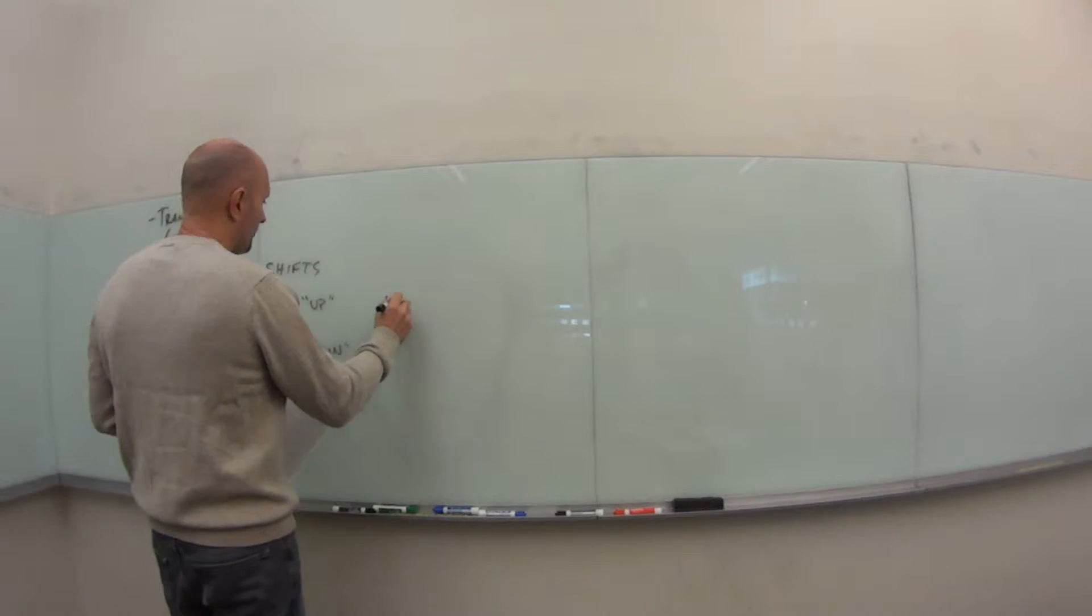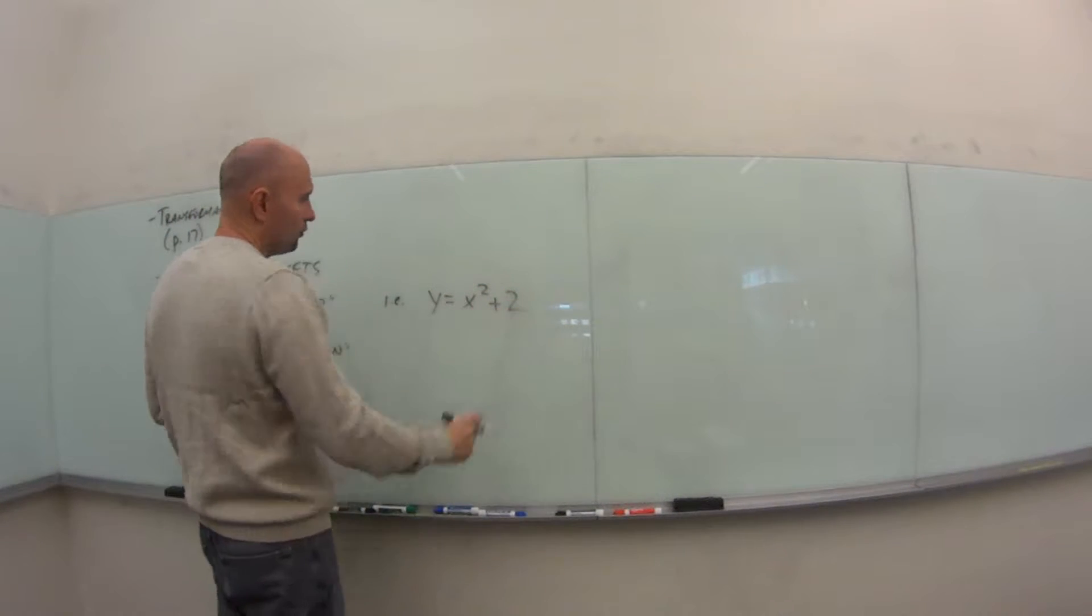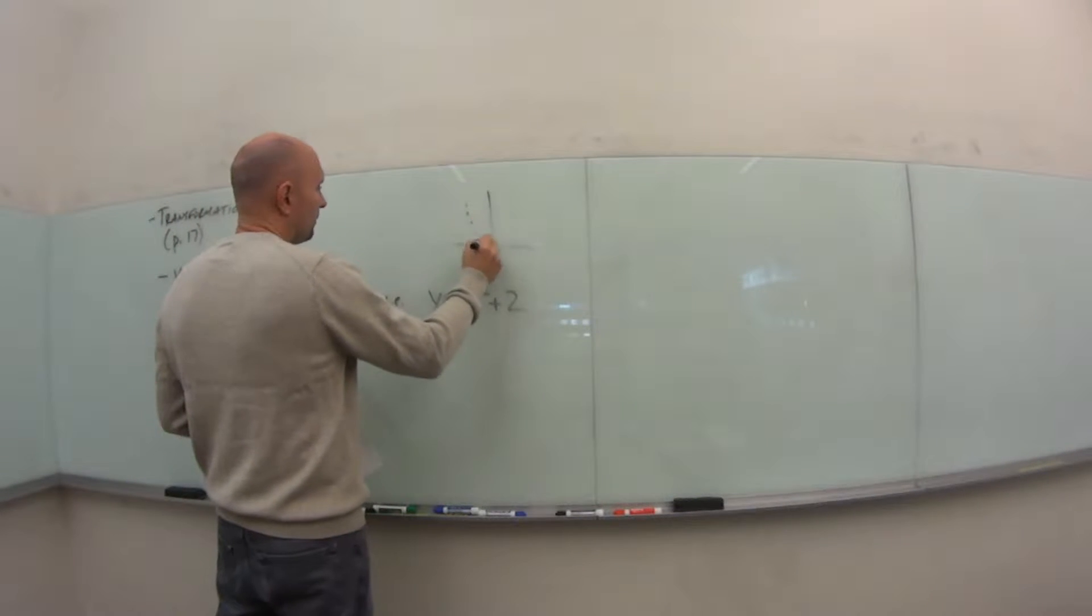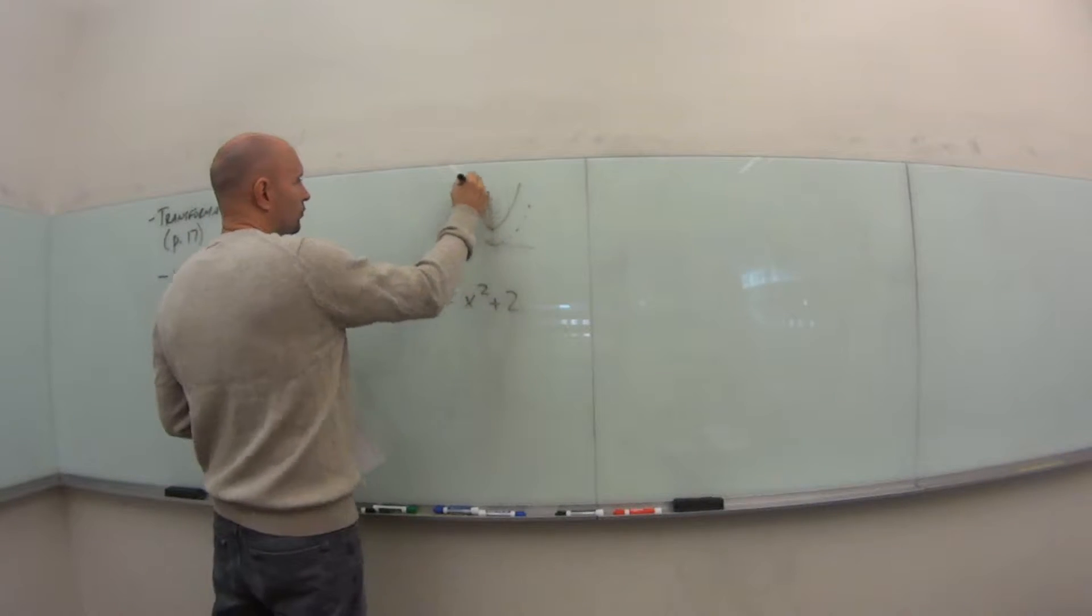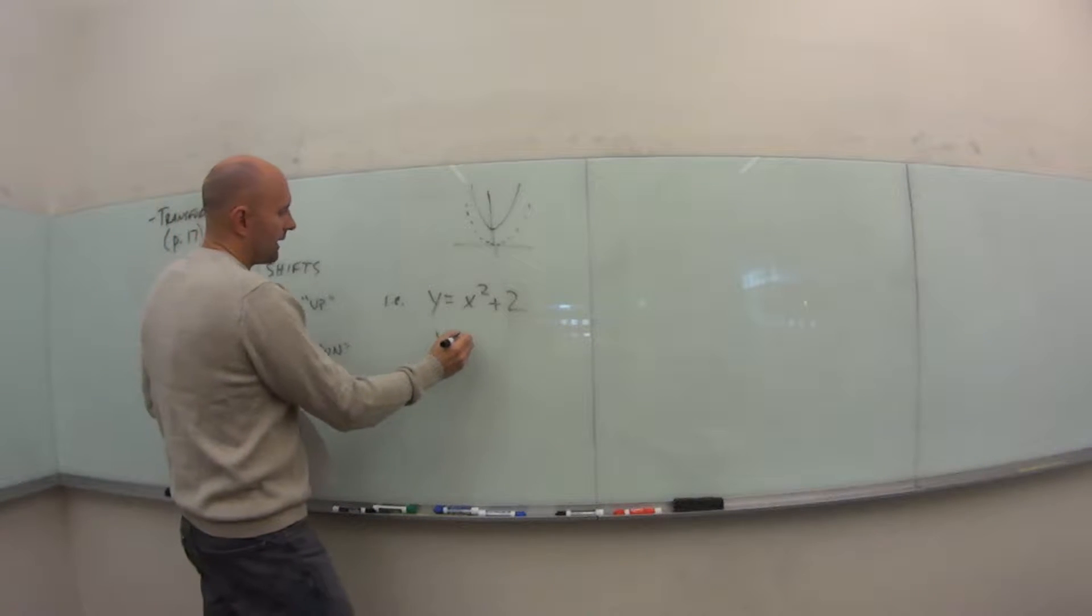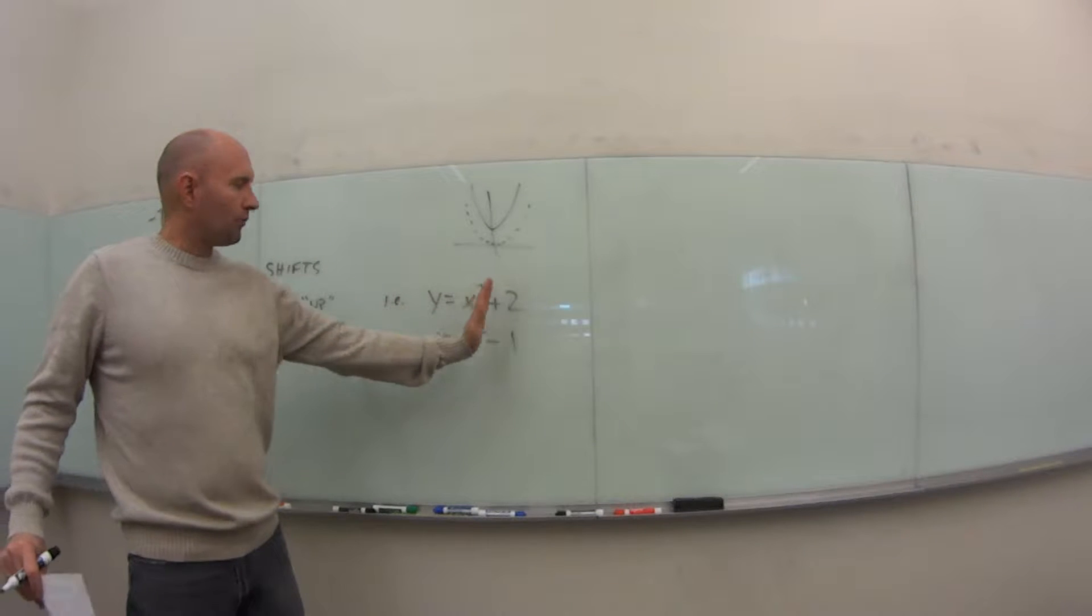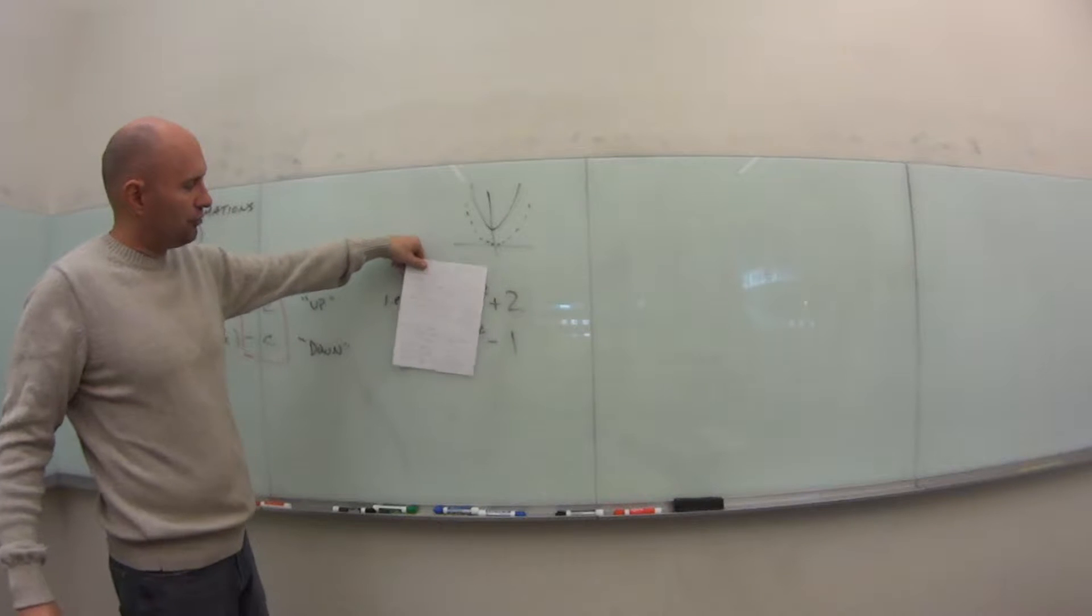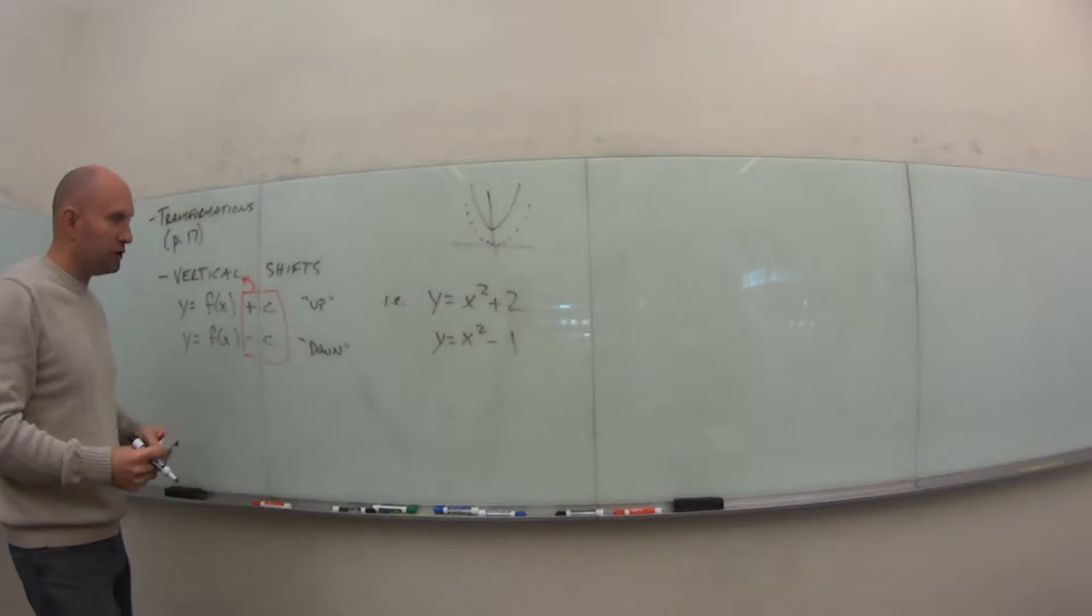For example, if I have y equals x squared plus 2, it's just taking the graph of the parabola, the x squared, and sliding it up the graph two units, just my vertical shift up or down. If I have y equals x squared minus 1, because it's outside of the main function, if I just block off the x squared, everything after that is just the shift. So the minus 1 just means it would slide this graph down one unit.